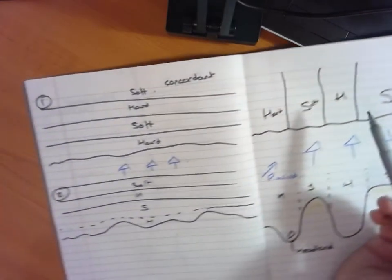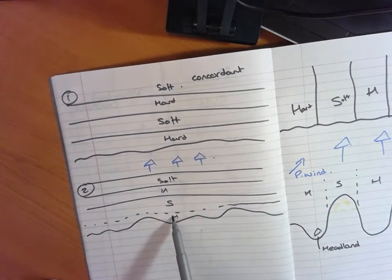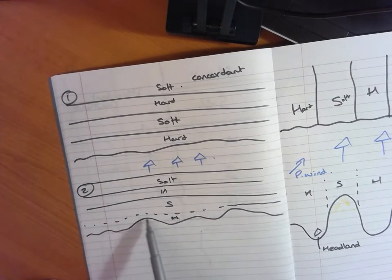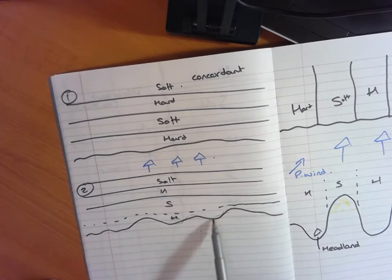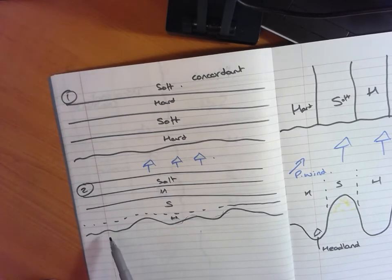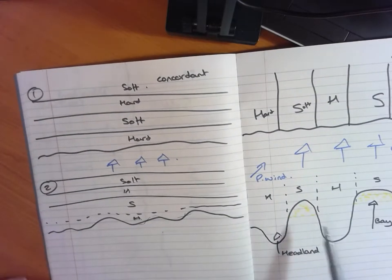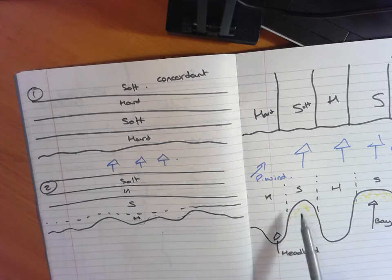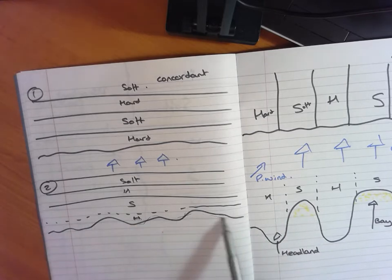So a concordant coastline here where I've got my hard rock because it's all eroding at a similar sort of timescale over a similar sort of timescale, you don't get those significant features. If you look back across, you don't get bays. You don't get the large scale headlands that you're used to seeing on a discordant coastline.